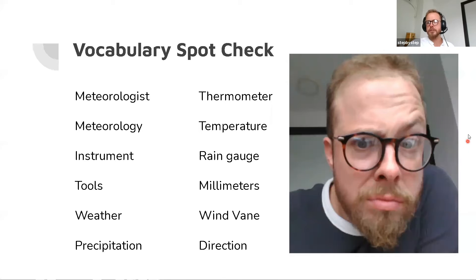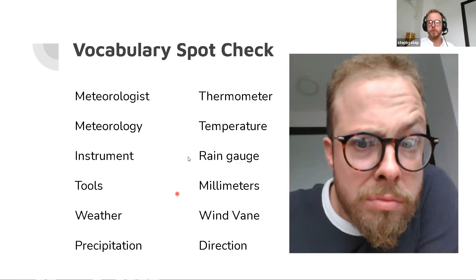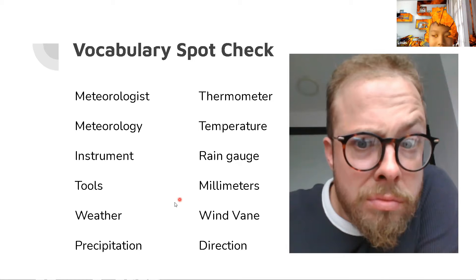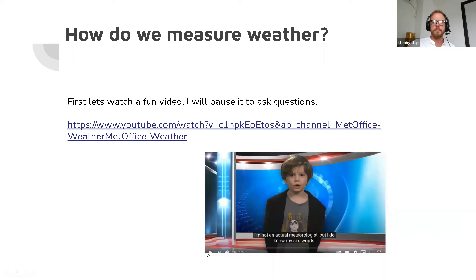Lewis, what do we measure rain in? What is the measurement for rain? We measure rain as language — that's the instrument. But what unit of measure do we use? Millimeters. Millimeters. Fantastic. Great understanding, guys. We're going to do this a little bit more now in class, but let's move on.